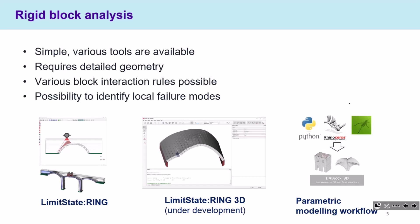We can include various block interaction rules. Most of you know the limit state RING, and at the moment we are developing limit state RING 3D, which allows 3D structures to be modeled, including more complicated flow rules such as crushing. We also developed a parametric modeling workflow to do parametric studies using standard rigid block analysis tools.